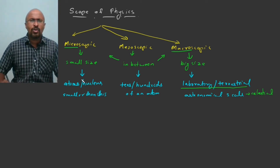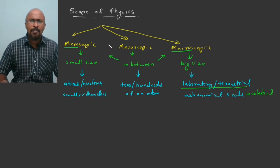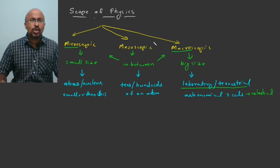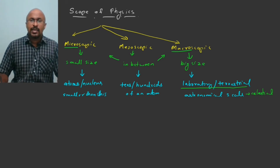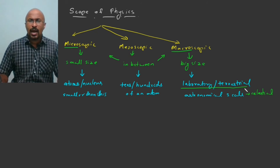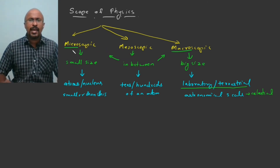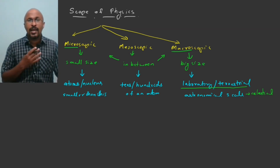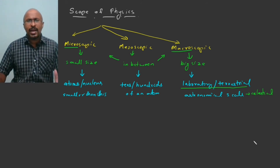Quantum mechanics or quantum theory is used to explain the microscopic domain. The mesoscopic domain is a developing field — nanotechnology and nanophysics fall within it. The macroscopic domain includes mechanics, thermodynamics, optics, and astronomical scales such as the study of galaxies. So the range of physics is from very small to very big, showing its wide scope.